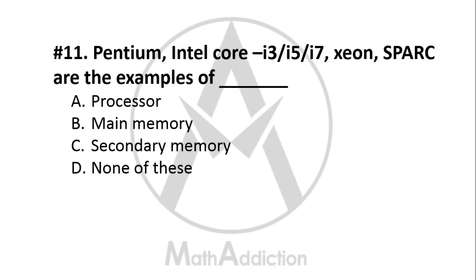Question No. 11: Pentium, Intel Core i3, i5, i7, Xeon, and Spark are examples of — what? Option A: Processor, Option B: Main Memory, Option C: Secondary Memory, Option D: None of these. The right answer is Option A — Processor. All of these are examples of processors.